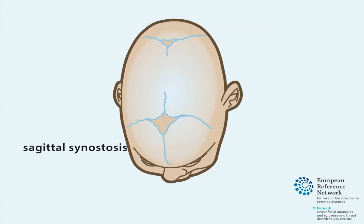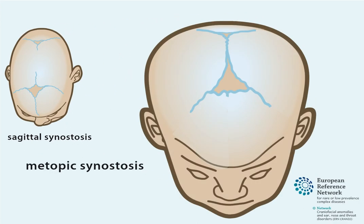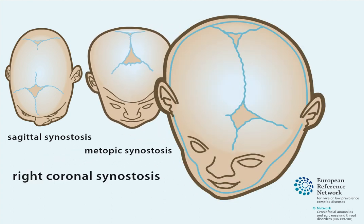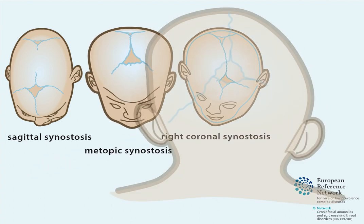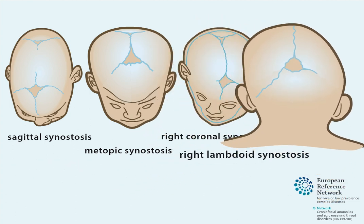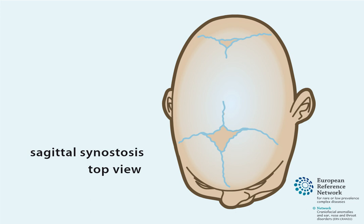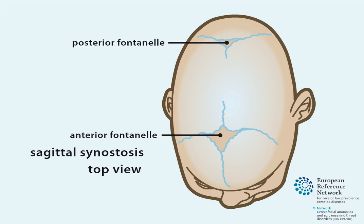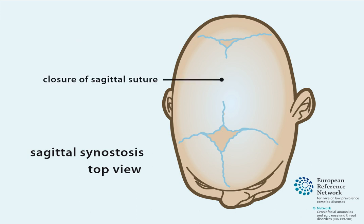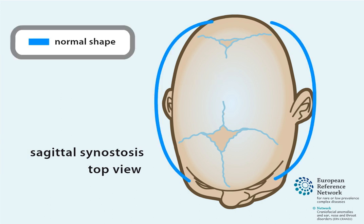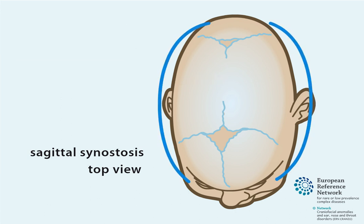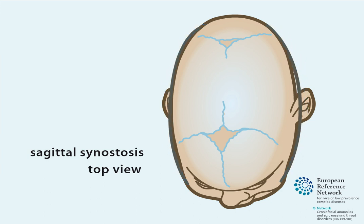Sagittal synostosis. The most common craniosynostosis involves the sagittal suture between the anterior and posterior fontanelle. Premature closure of the sagittal suture inhibits skull growth to the sides, resulting in an elongated and narrow skull shape, evidently seen when looking from above.